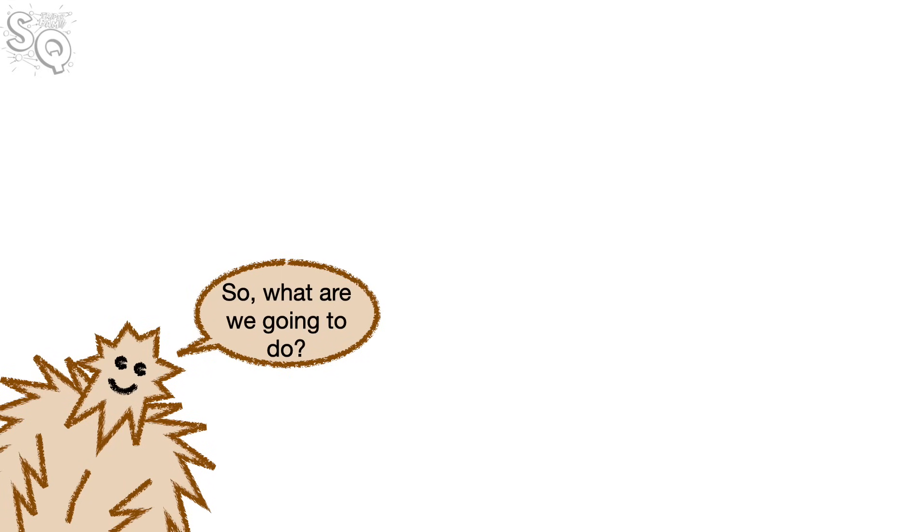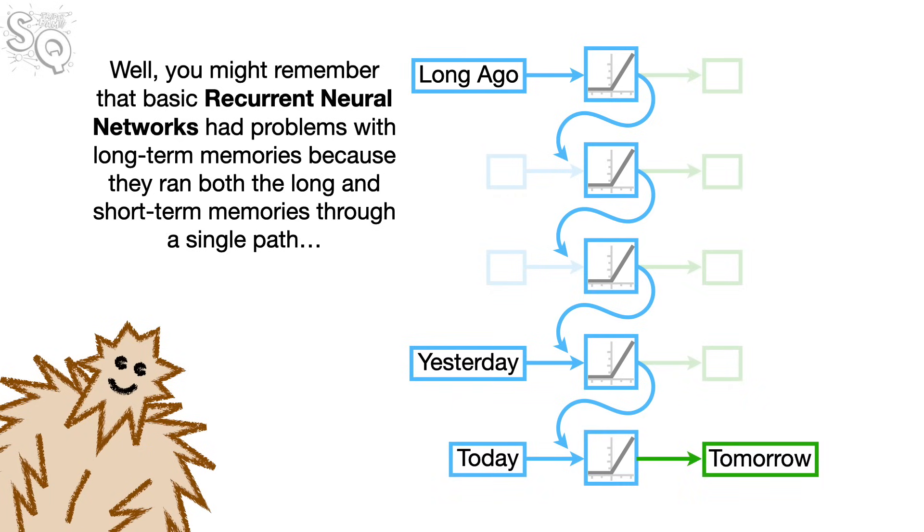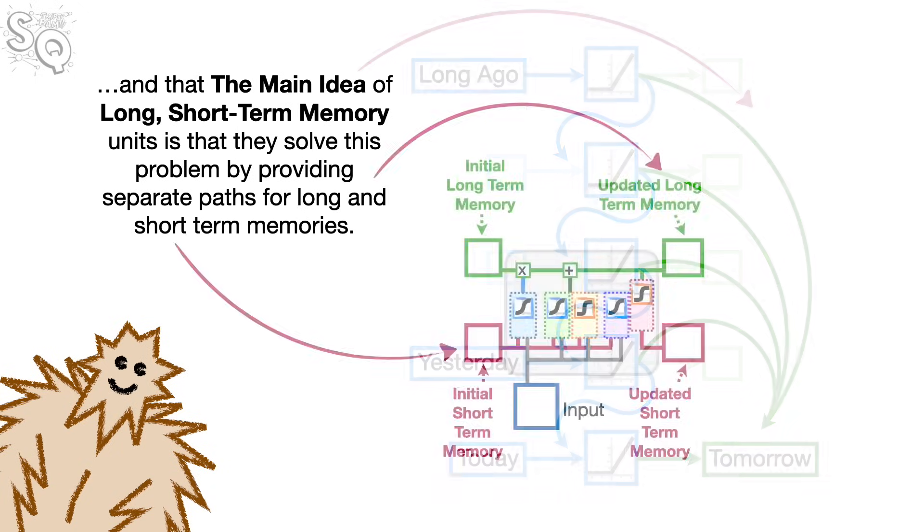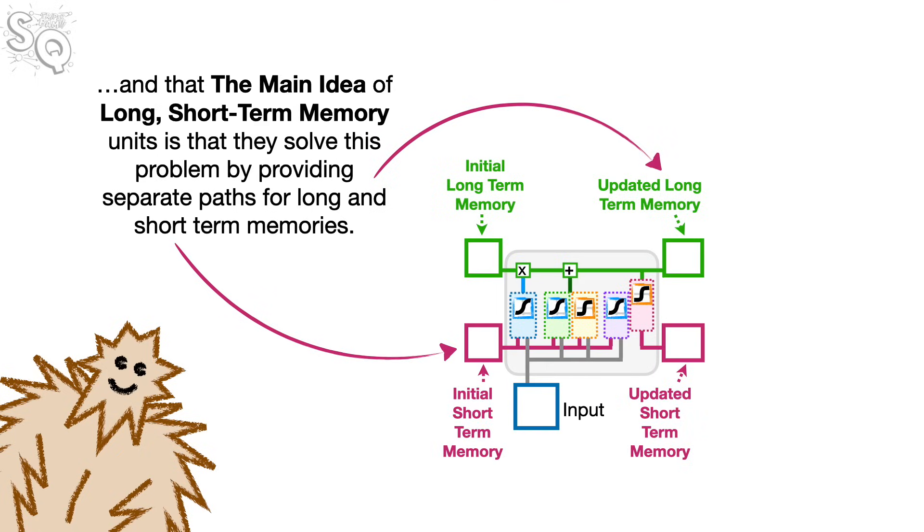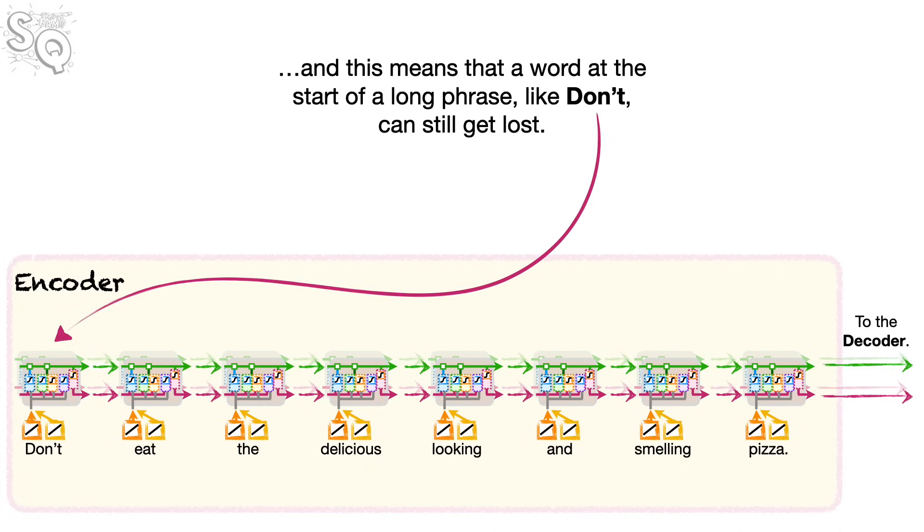So what are we going to do? Well, you might remember that basic recurrent neural networks had problems with long-term memories because they ran both the long- and short-term memories through a single path. And that the main idea of long short-term memory units is that they solve this problem by providing separate paths for long- and short-term memories. Well, even with separate paths, if we have a lot of data, both paths have to carry a lot of information. And that means that a word at the start of a long phrase, like don't, can still get lost.